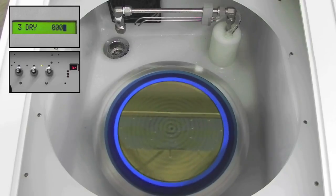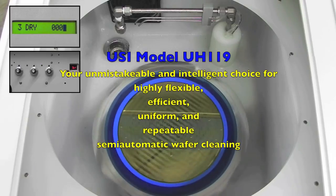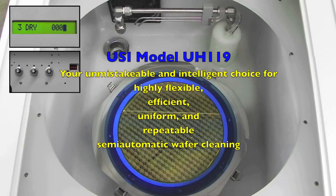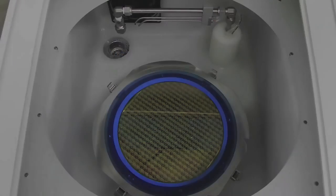Ultron Systems model UH-119 High Pressure Wafer Cleaning System. Your unmistakable and intelligent choice for a highly flexible, efficient, uniform, and repeatable semi-automatic wafer cleaning.